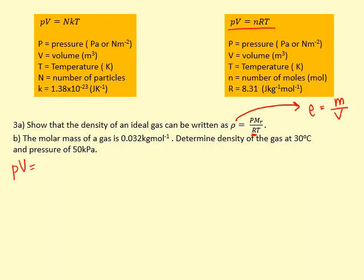I also know that n equals m over mr, so if I put that in I get PV equals mRT over mr. But I want density, so I'm going to have to do mass divided by volume. I'm going to divide both sides by the volume and bring the mr to the other side to make it easier.